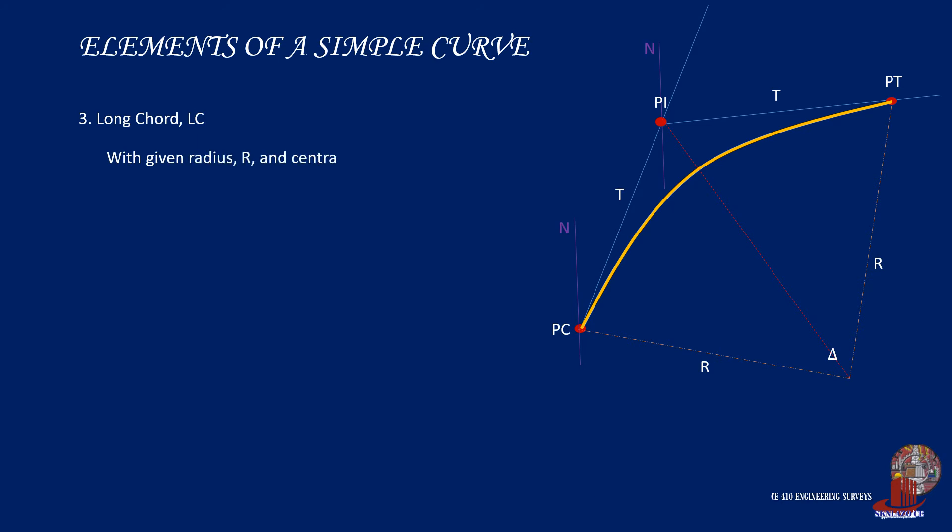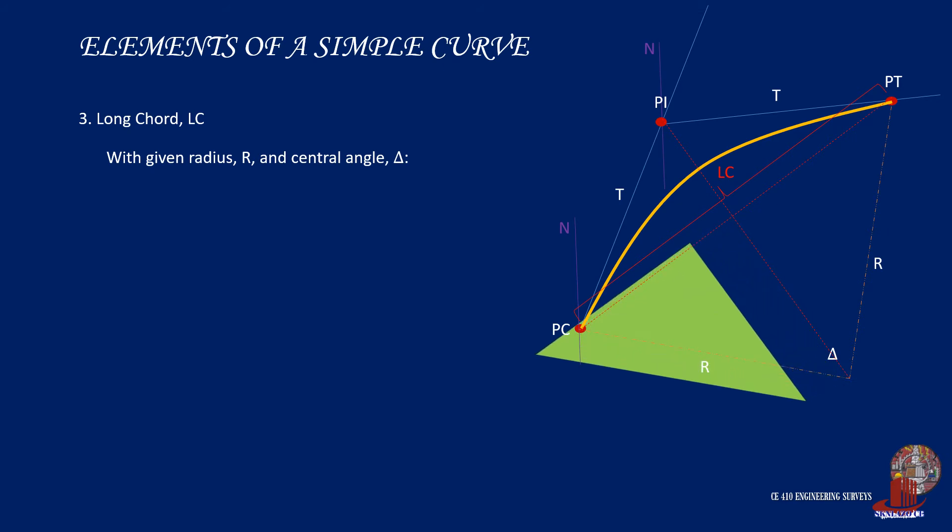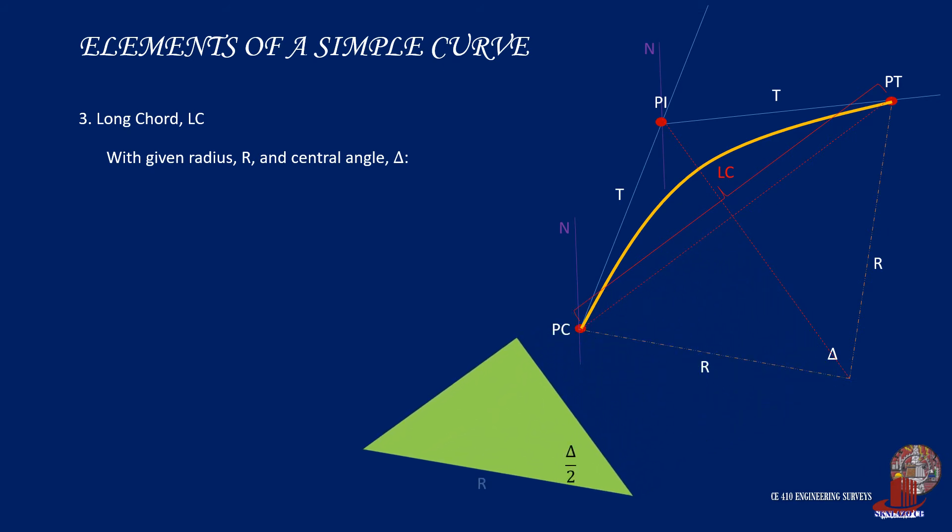The long chord is the distance taken from point of curve PC and point of tangent PT. We can derive the formula for LC by using the triangle formed from PC and the center of the curve with the line projected from PI. The right triangle also contains half of delta with the sides as R and half of the long chord LC. By taking the sine of half of delta, which is the opposite side, LC all over 2, all of which is divided by R, we can derive the long chord as 2R sine of delta all over 2.